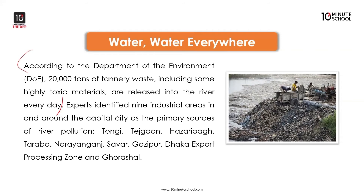Experts identified nine industrial areas in and around the capital city as the primary sources of river pollution.